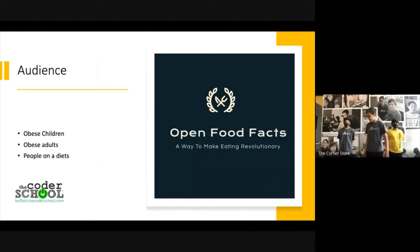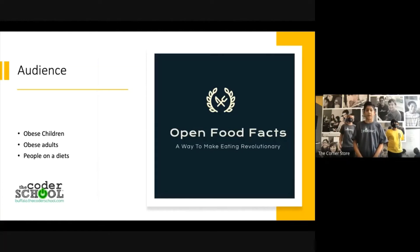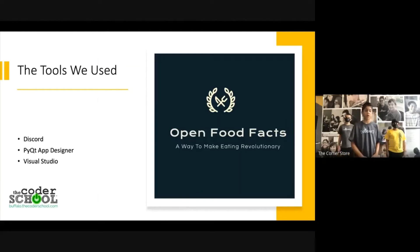Now we'll have Sanjay talk about the audience on our app. Hi, my name is Sanjay Nogali. In the U.S., 1 in 5 children between the ages of 12 and 19 are obese. We wanted to make it easier for not only children, but everyone, to eat healthier. This will also make it easier to make food decisions when on a diet. Now, Arhan will talk about the tools we use to make this app.